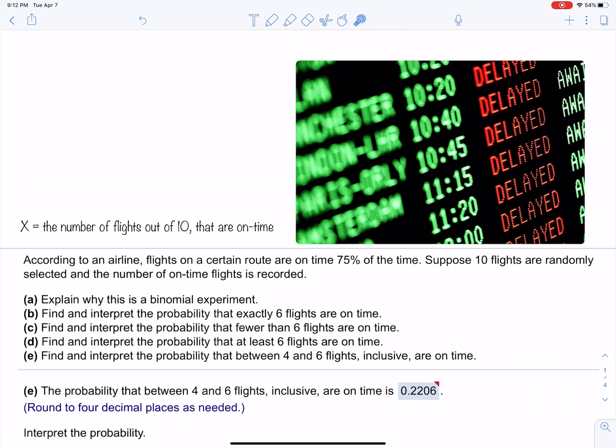So let's think about the random variable X: it's the number of flights out of ten that are on time. Because there are ten flights and we want to find out how many are on time, some of these questions say find the probability that six are on time, find the probability that fewer than six are on time, interpret the probability.